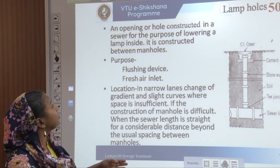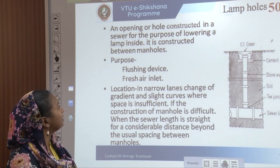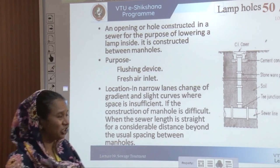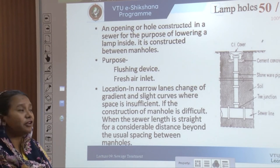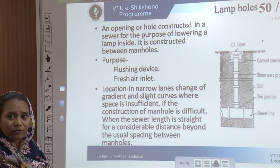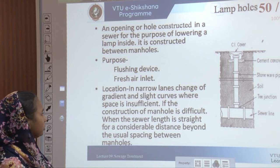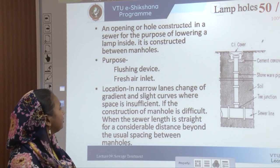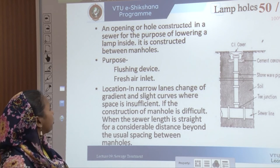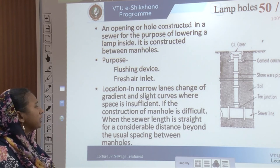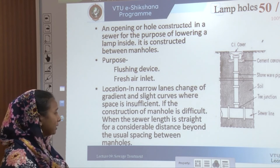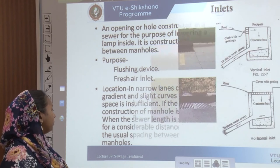A lamp hole is an opening constructed for the purpose of lowering a lamp inside a sewer line. It also serves as a flushing device and a fresh air inlet. Lamp holes are located wherever there is a change of route, change of gradient, or a curve in the flow direction. They are also provided where space is insufficient and construction of a manhole is difficult. A sewer length is straight and spaced with respect to the spacing of manholes.